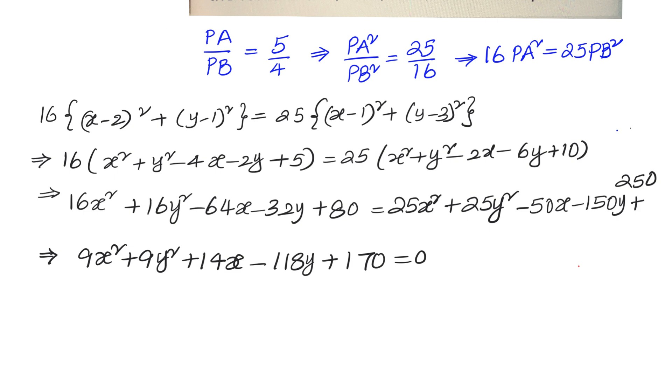We see the constant term is 170 as given. The equation is in the form ax² + by² + cxy + dx + ey + 170. We do not have any xy term, so c = 0. Now let us compare and find a, b, c, d, e.